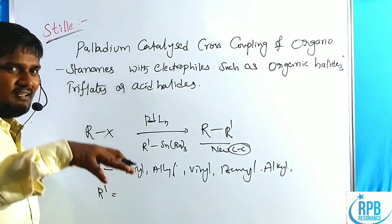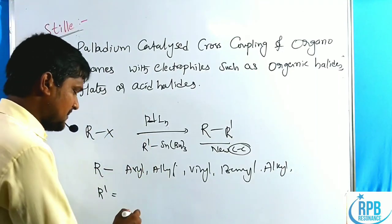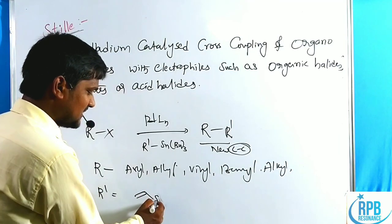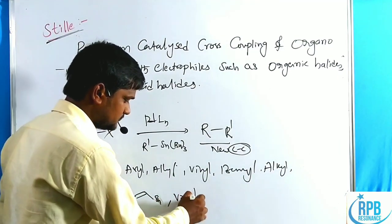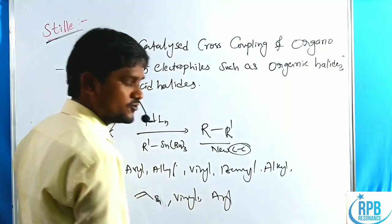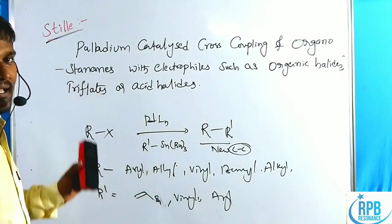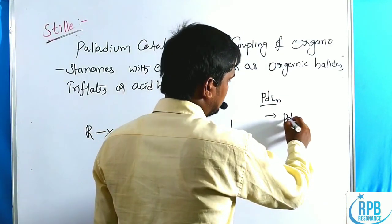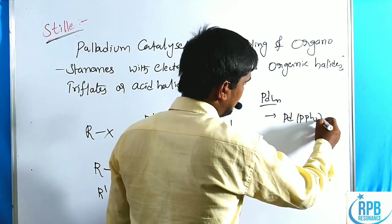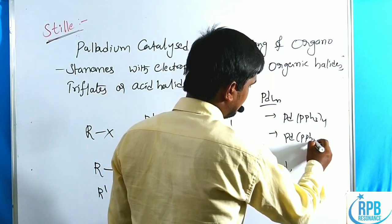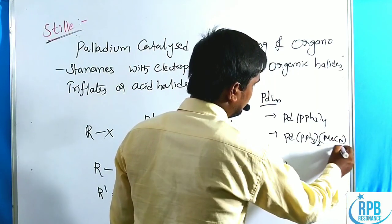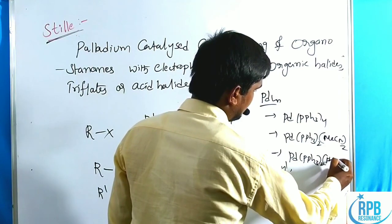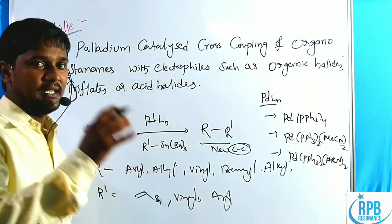In the Stille reaction, R' is mainly vinyl stannane or aryl stannane compounds, as these show the most reactivity. Palladium L_n complexes commonly used include Pd(PPh₃)₄, Pd(PPh₃)₂, Pd(MeCN)₂, Pd(PPh₃)₂(PhCN)₂, and related palladium complexes.